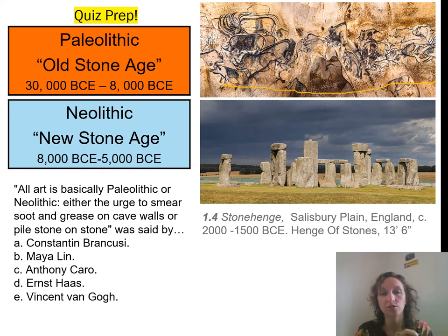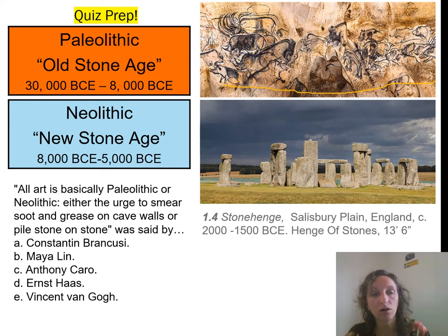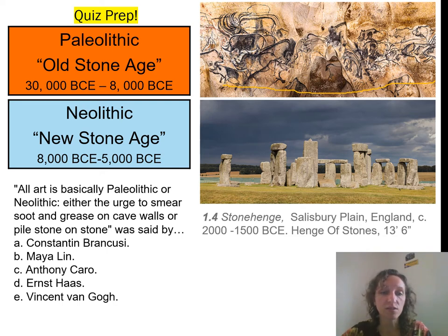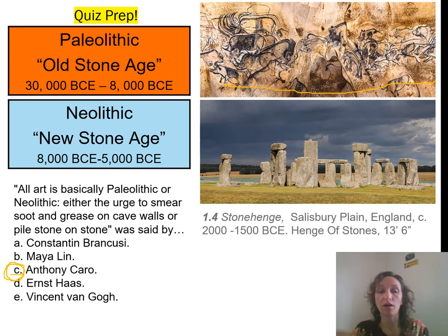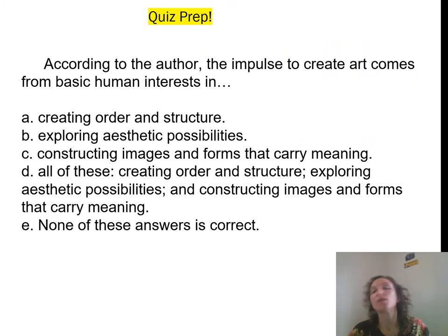During the neolithic era, things like monuments and permanent structures were starting to be built. There's a quiz question about a quotation: 'All art is basically paleolithic or neolithic — either the urge to smudge soot and grease on cave walls or pile stone on stone.' This was stated by Anthony Caro, a sculptor from around the 1950s. I'm telling you the correct answer because some of you may not have your books yet.